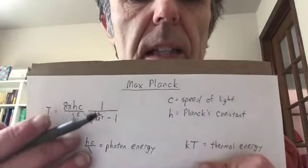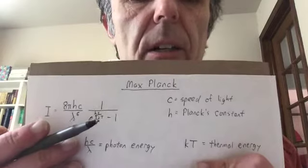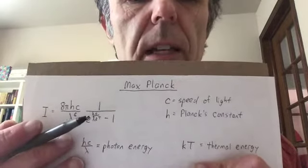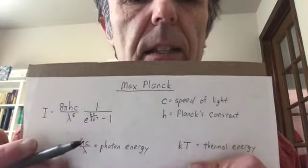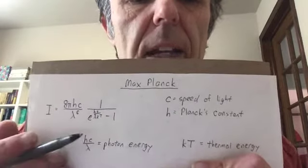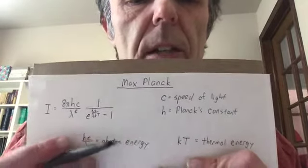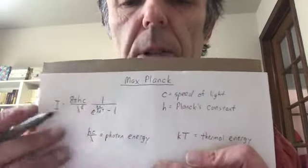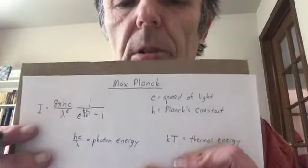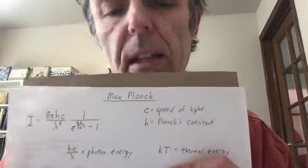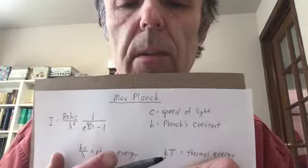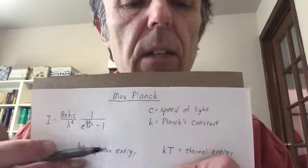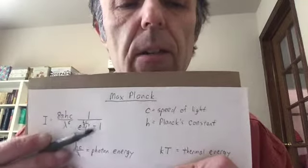We've got to focus on this exponential factor hc/λkT. That's a ratio of two energies. First, there's hc/λ, the energy of a photon. The energy of the photon divided by kT, that's a thermal energy. An object at absolute temperature T has atoms with energies on the order of Boltzmann's constant k times T. So it's a ratio of photon energy to thermal energy in this exponential.